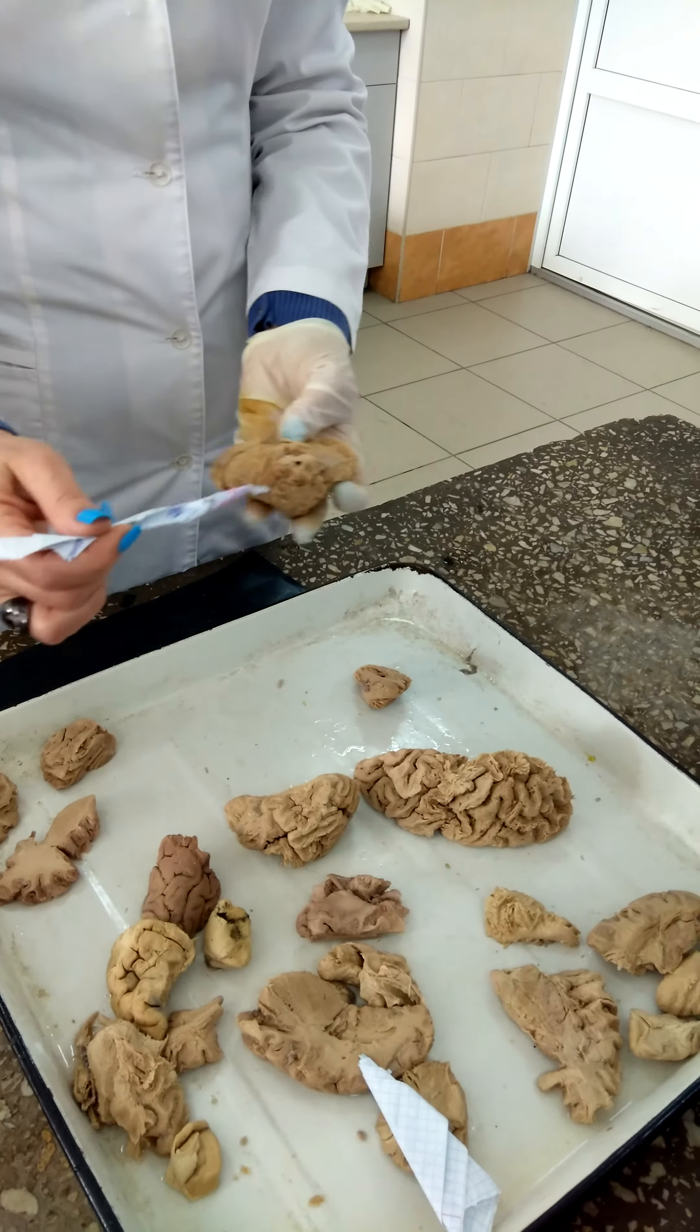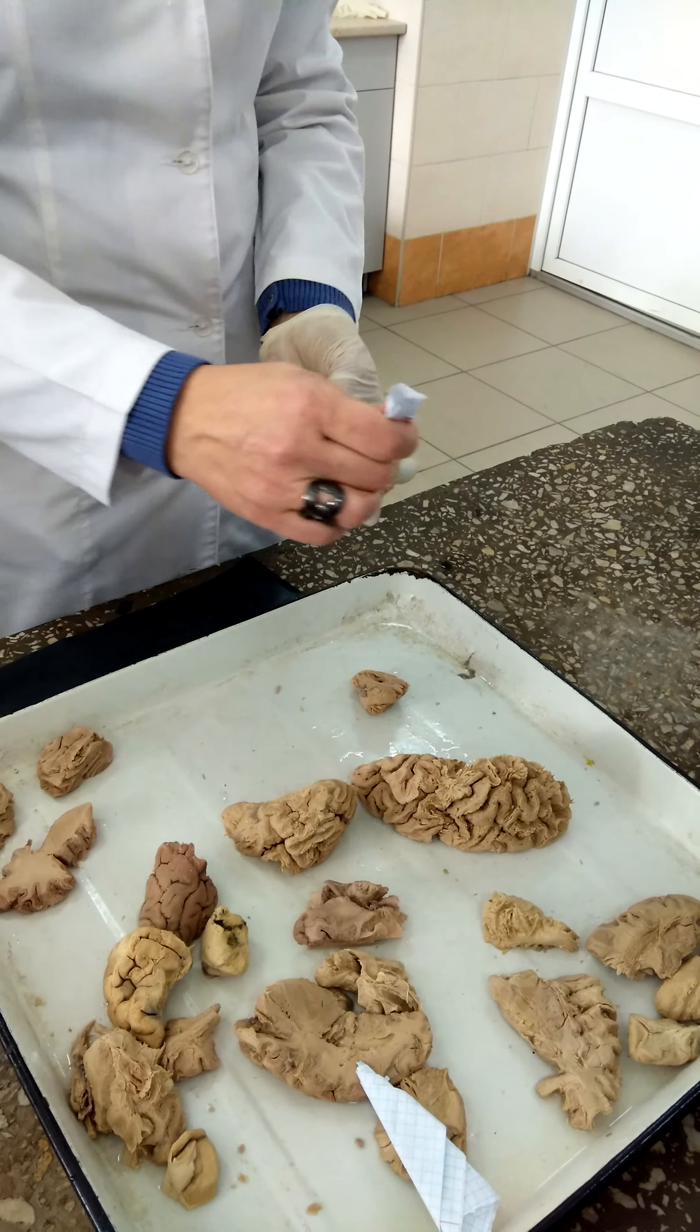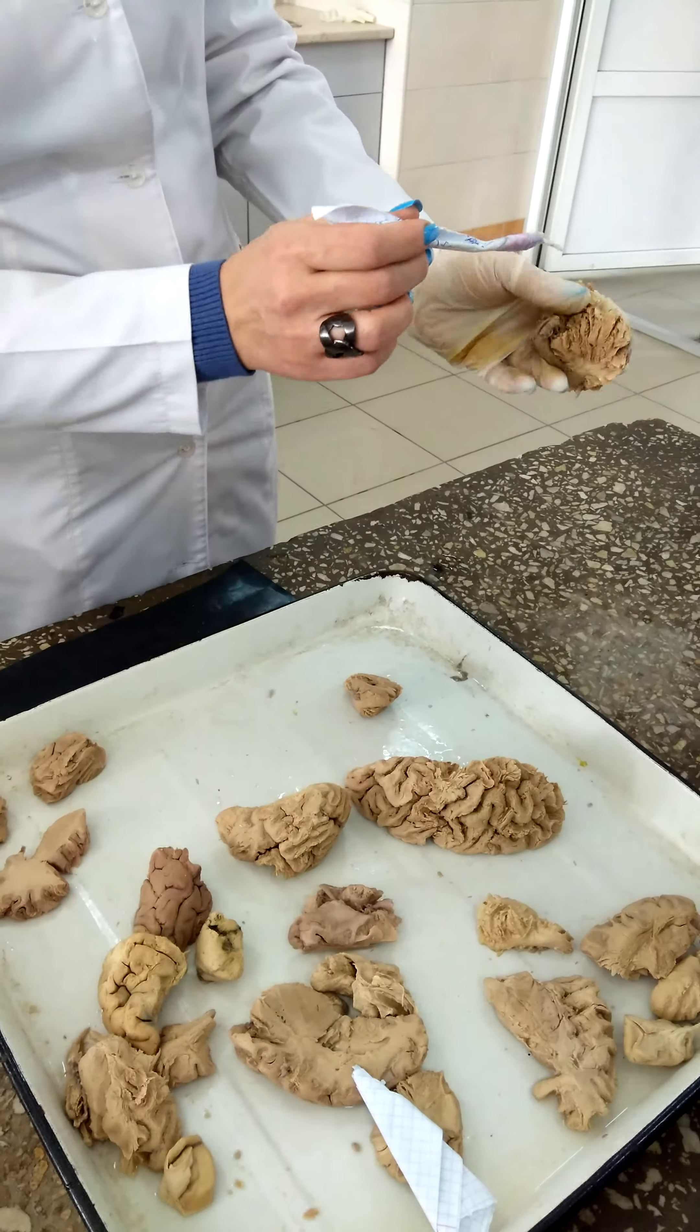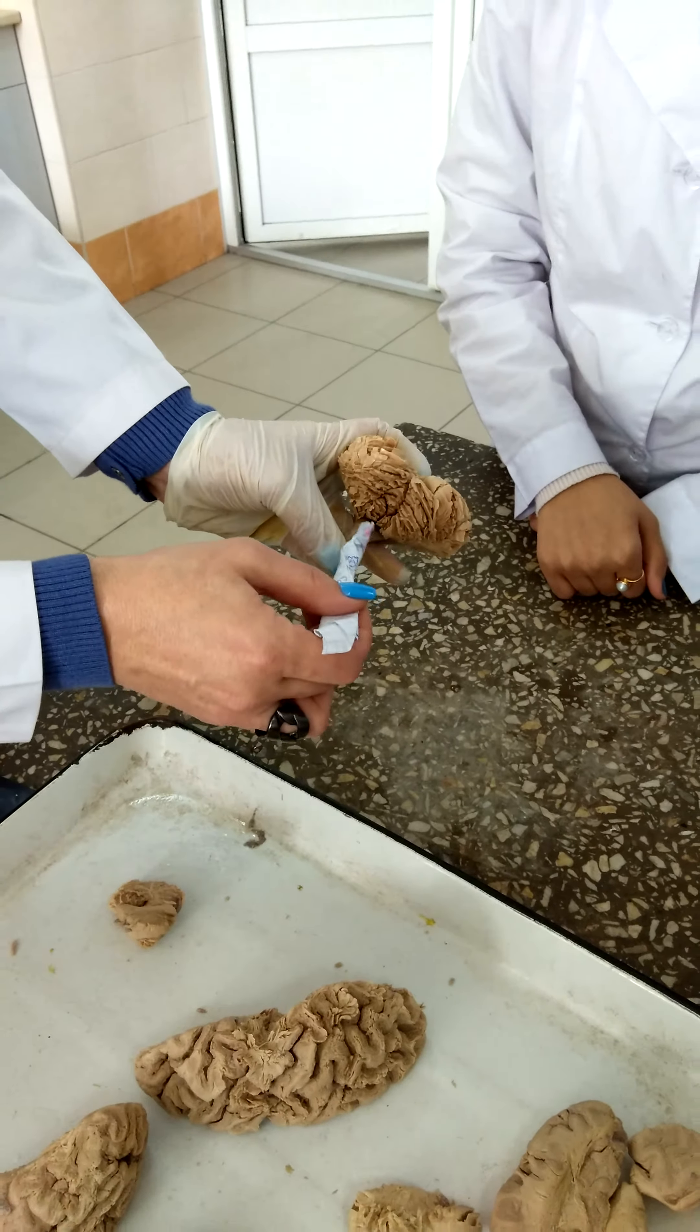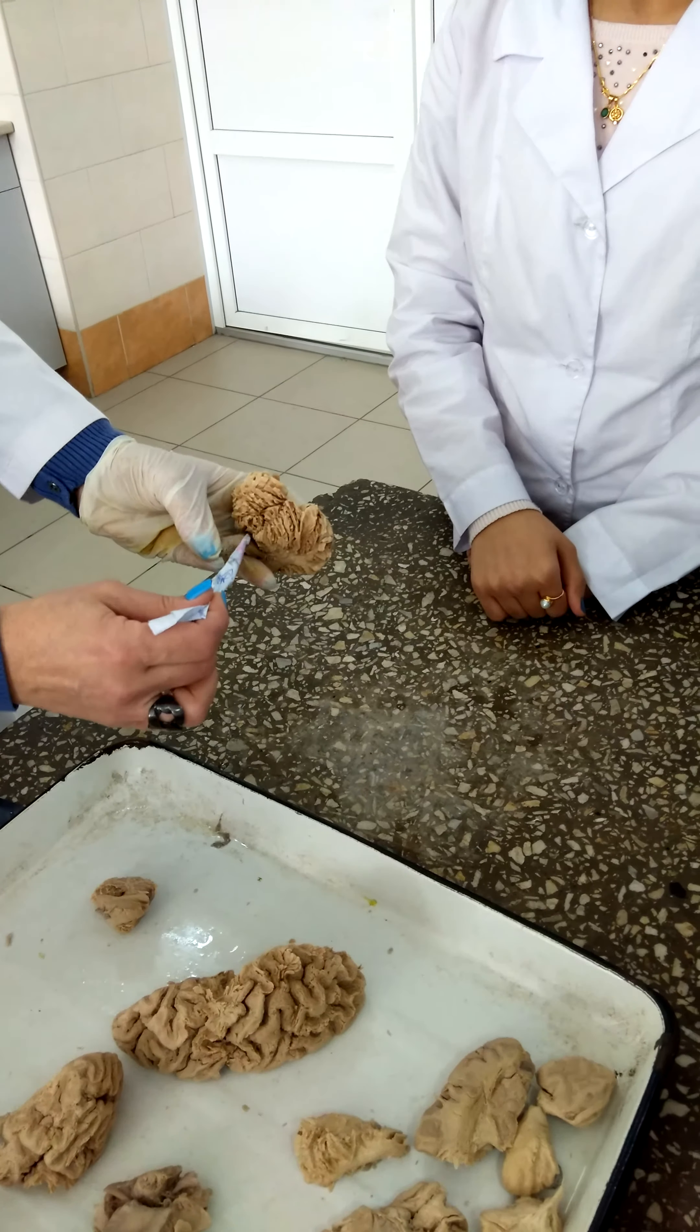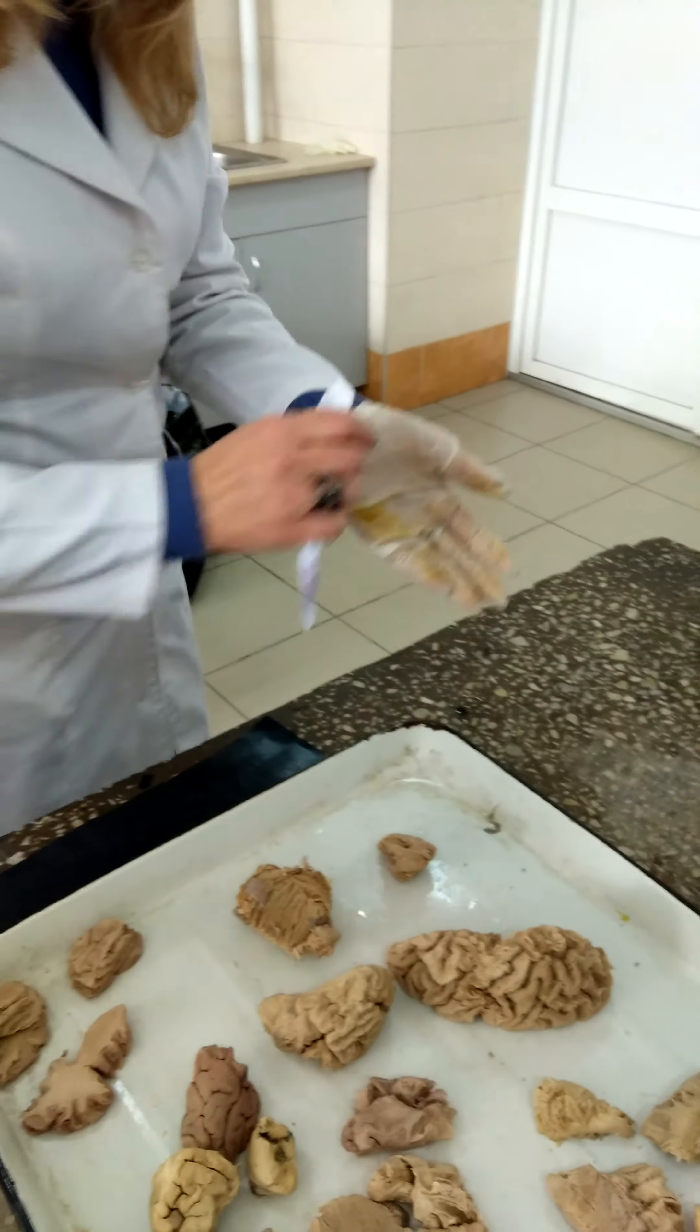The topography of rhomboid fossa or relief I will show on the picture only. Here you can see aqueduct, the cavity of midbrain which communicates with fourth ventricle. The fourth ventricle is located between medulla oblongata ventrally and cerebellum dorsally.